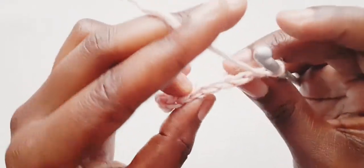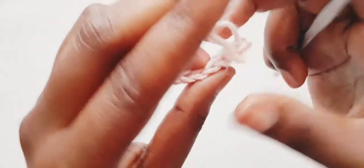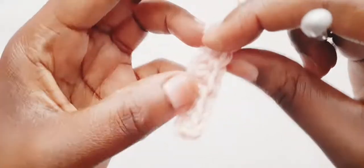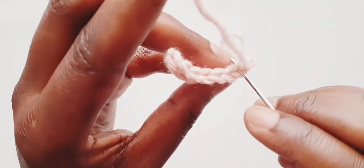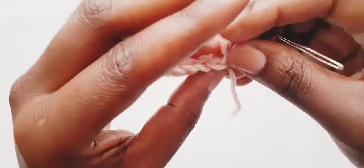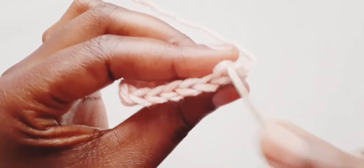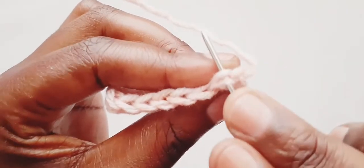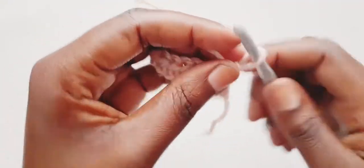For row two, we are going to make seven half double crochets again, but in the back loops only. Okay, so the back loop that I'm talking about—as you can see here, these stitches have a V sign. So the back loop is basically just the loop behind here. I hope you can see that, the loop behind here. So instead of inserting our hook into the whole stitch, we are going to do it in the back loop only. So we've already chained one and turned our work. Let's make seven half double crochets in the back loop. That's one.